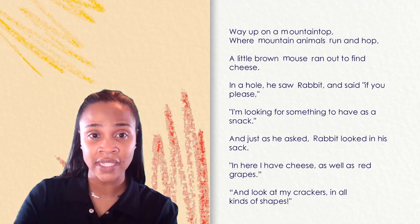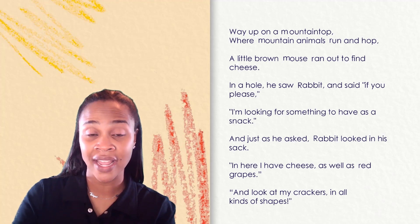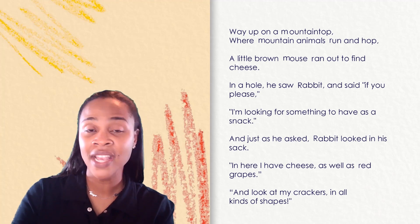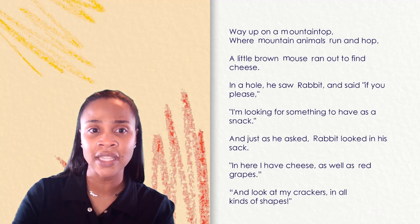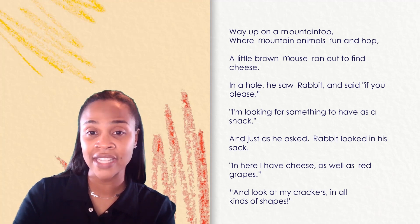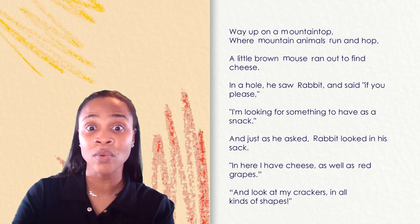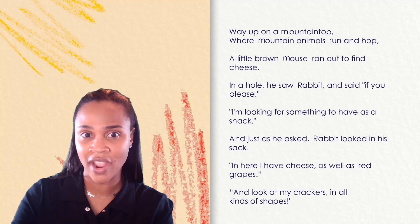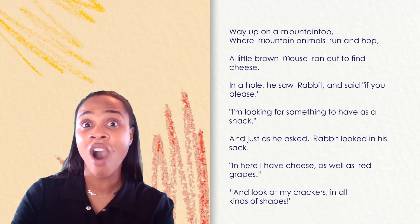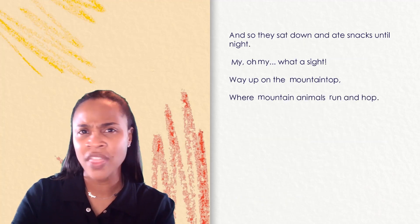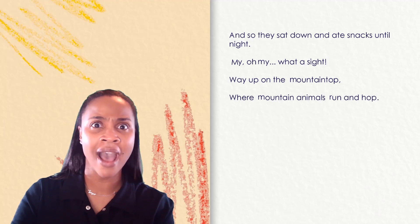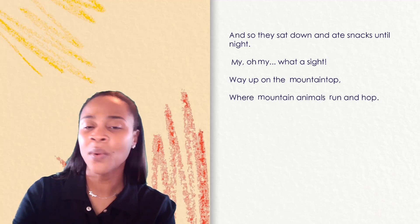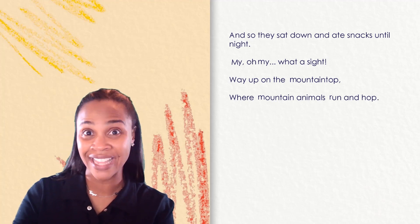Way up on a mountain top where mountain animals run and hop, a little brown mouse ran out to find cheese. In a hole he saw Rabbit and said if you please, I'm looking for something to have as a snack. And just as he asked, Rabbit looked in his sack. In here I have cheese as well as red grapes. And look at my crackers in all kinds of shapes. And so they sat down and ate snacks until night. My oh my what a sight. Way up on that mountain top where mountain animals run and hop.